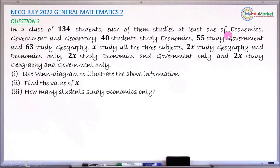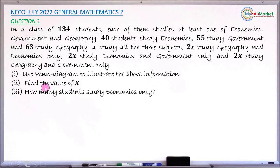Each of them studies at least one of economics, government, and geography. 40 students study economics, 55 study government, and 63 study geography. X students study all three subjects, 2x study geography and economics only, 2x study economics and government only, and 2x study geography and government only. The three questions asked: Roman numeral 1 — use a Venn diagram to illustrate the above information; Roman 2 — find the value of x; Roman 3 — how many students study economics only.